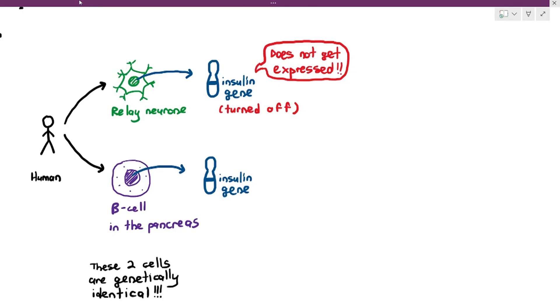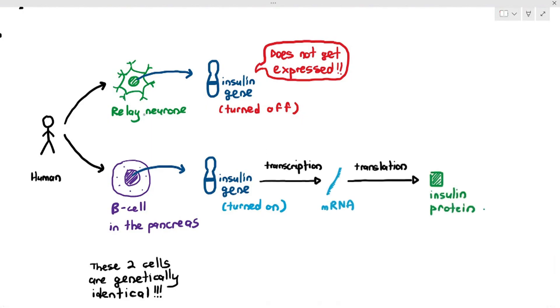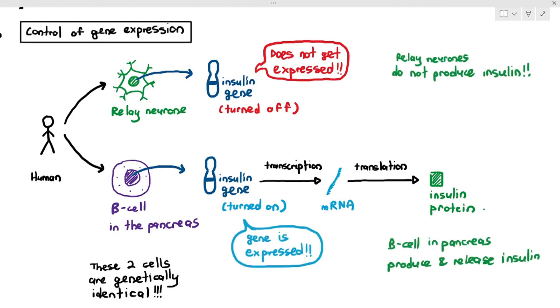However, the beta cell in the pancreas, the insulin gene will be switched on, which means to say the gene gets expressed, where transcription happens, translation happens to produce the insulin protein. So the relay neurons, because the insulin genes are turned off, the genes do not get expressed, the relay neurons do not produce insulin. But the insulin gene in the beta cell of the pancreas is turned on, therefore the beta cell produces and releases insulin. This is the first example of the control of gene expression. Gene expression where certain genes can be switched on and switched off.